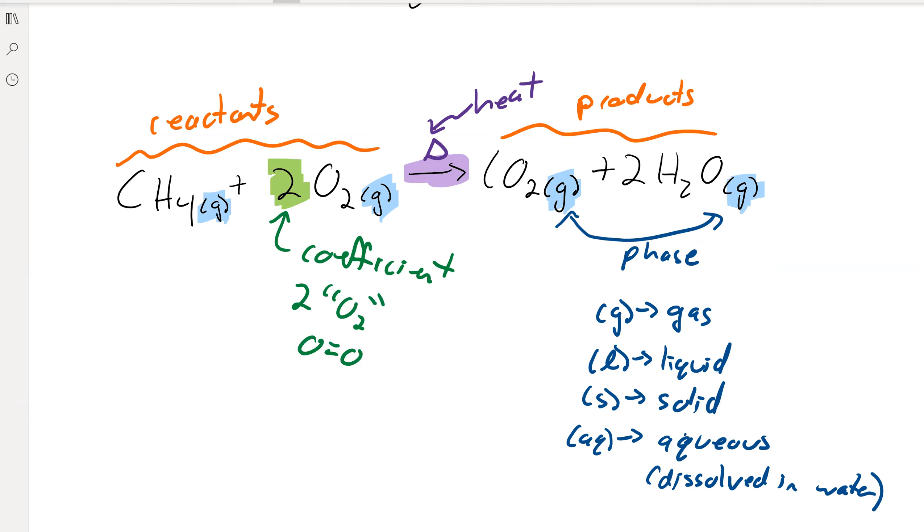So we have one O2—the Lewis structure looks like that—and then we have another O2. So in total, we have four oxygen atoms but only two molecules of O2.